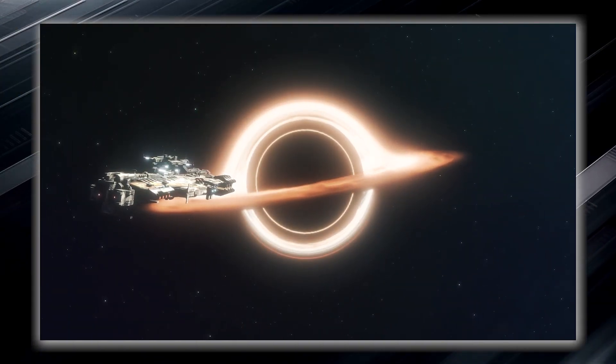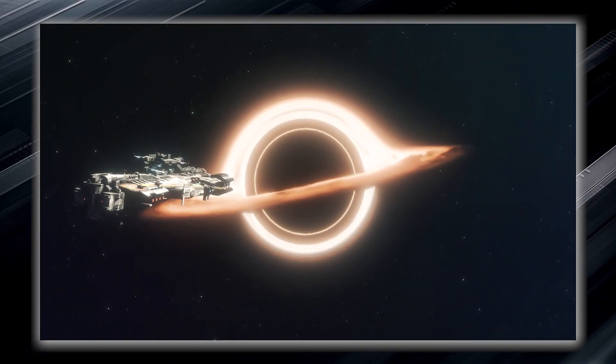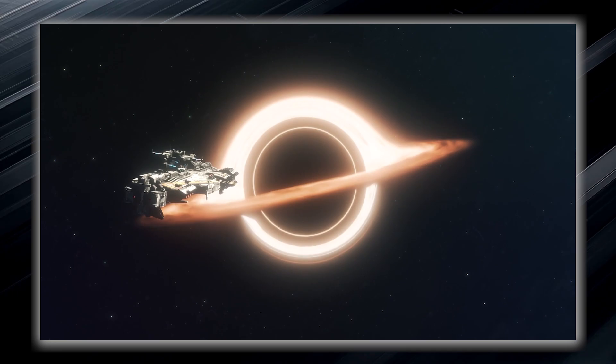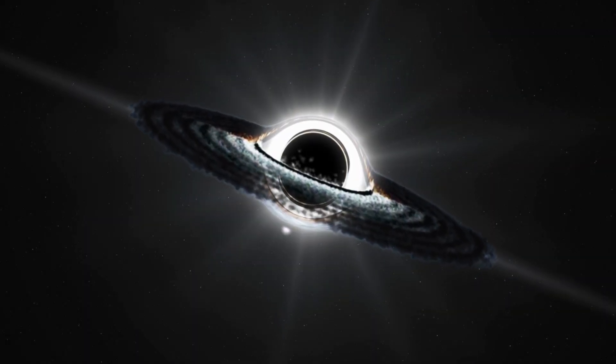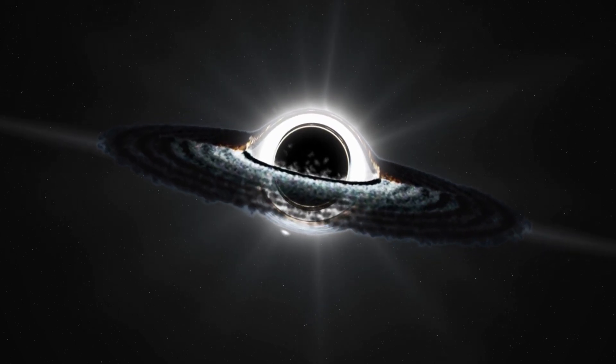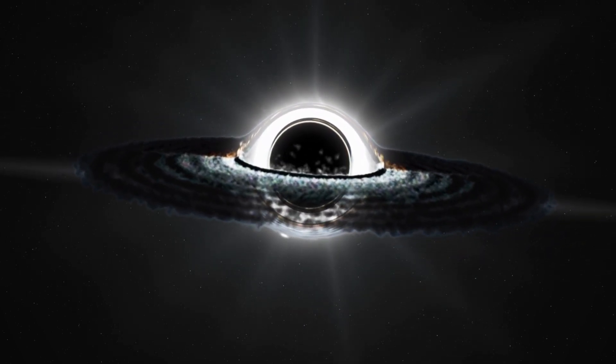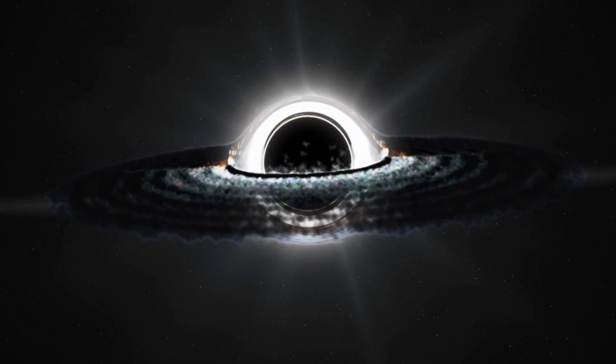Once something, such as an unfortunate spacecraft or even light, crosses its boundary, it can never escape the clutches of the black hole. The event horizon forms an invisible force field that holds everything within it, including light, which is normally considered the fastest entity in the universe.